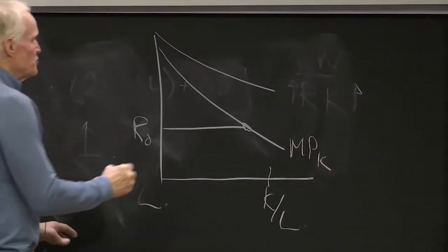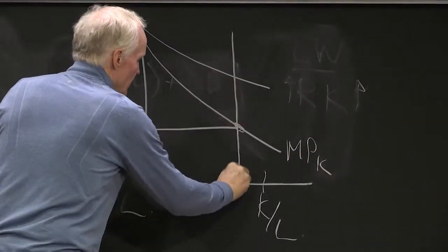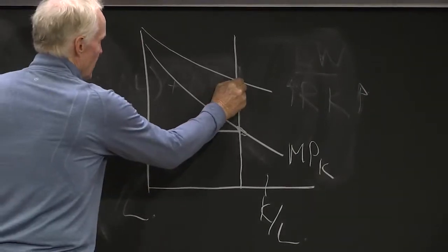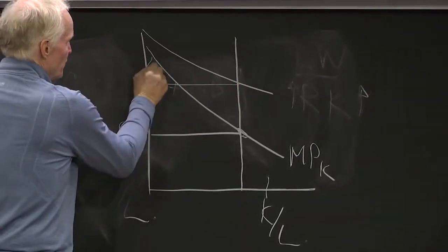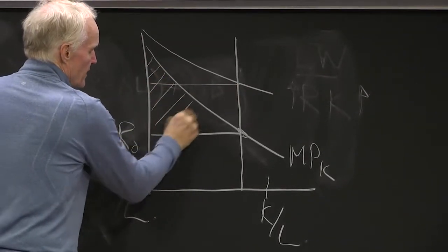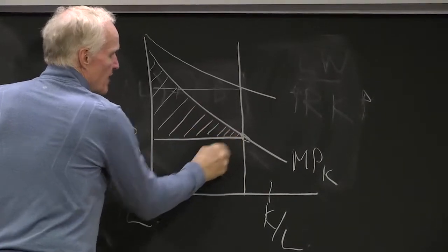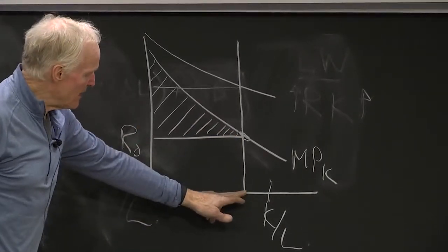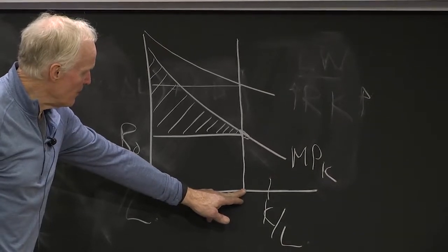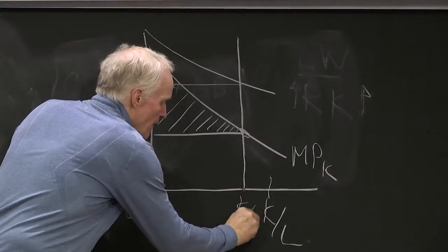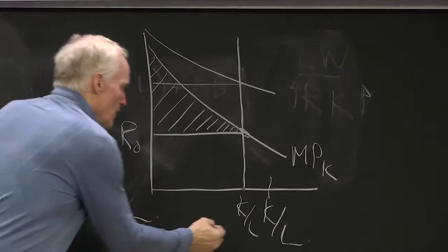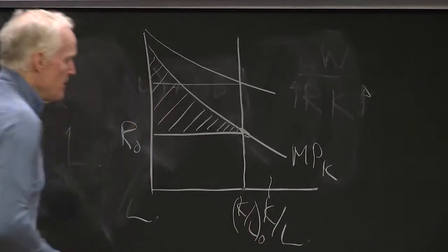Because look what would happen in the short run. In the short run, labor used to get hit, right? That's what workers collected. Because think of it this way: This is the amount of capital that we had per worker, K over L. That's the amount of capital we had for workers to begin with.